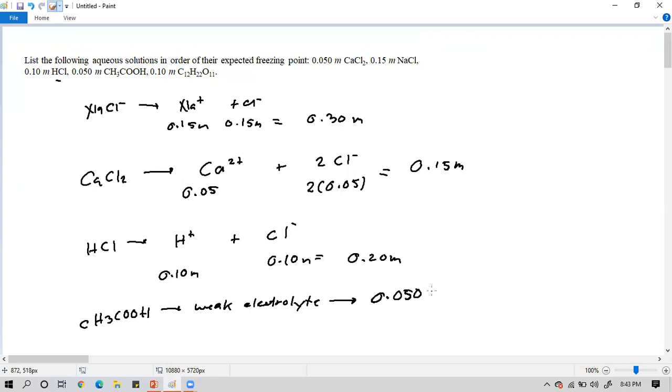Let's have an analysis for this problem: list the following solutions in order of expected freezing point. First, we'll base it on the presence of electrolytes. For sodium chloride, it will dissociate into sodium plus chloride, so that's 0.15 molal plus 0.15 molal. The sum is 0.30 molal. For calcium chloride, it dissociates into calcium plus 2 chlorides. That is 0.05 plus 2 times 0.05, so 0.15 molal. For HCl, it's also a strong electrolyte. HCl dissociates into hydrogen and chloride: 0.1 molal and 0.1 molal, addition is 0.2 molal.